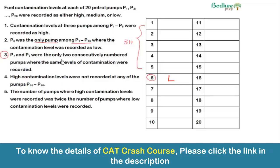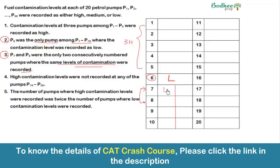The third condition is that P7 and P8 were the only two consecutive-numbered pumps where the same level of contamination was recorded. Since P6 is the only low pump in the first ten, pumps seven through ten must be either high or medium, and since P7 and P8 share the same level, we have two cases: both are medium or both are high.